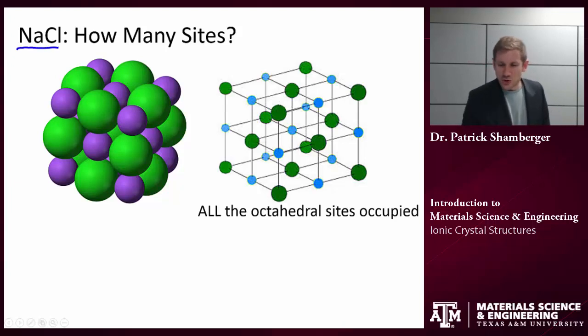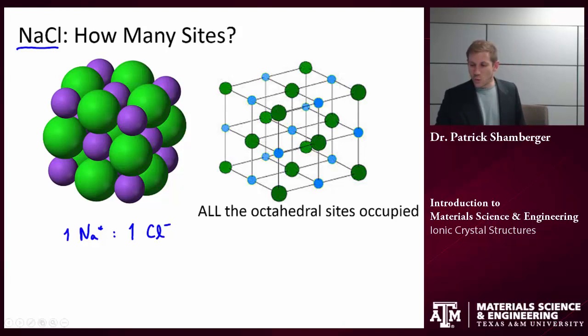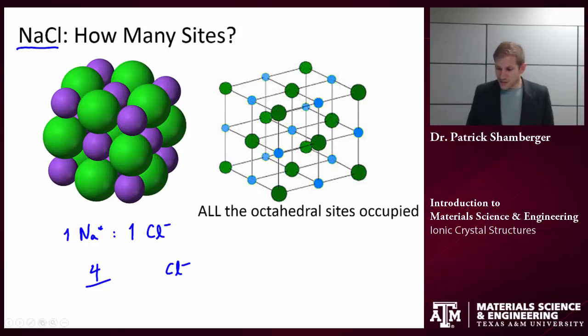That comes down to the stoichiometry of the solid. We know that we need one sodium for each one chlorine that we have. Let's look at the FCC lattice again. In one unit cell we have four atoms of chlorine. These are actually ions. So four chlorine ions.